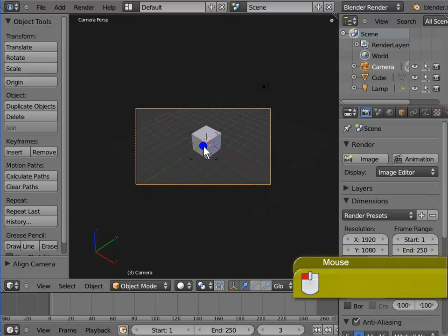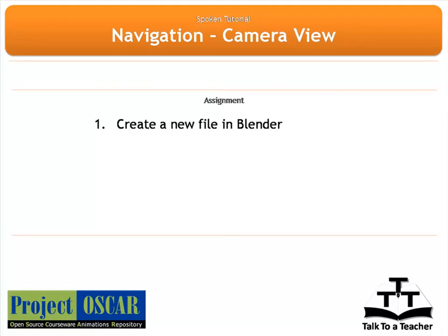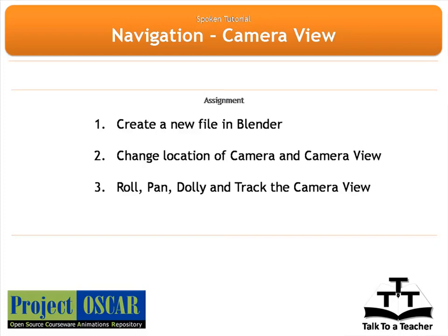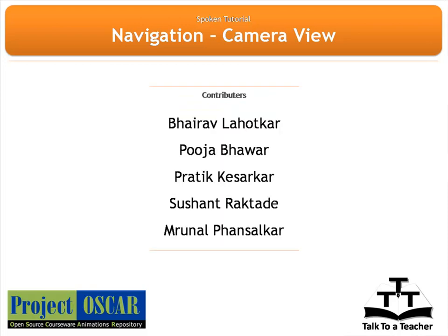Left click on screen to lock the camera view. Now this is your new camera view. That wraps up our tutorial on navigation camera view. As an exercise, in a new file, change the location of the camera and the camera view, roll, pan, dolly, and track your camera view, and use the fly mode to select a new camera view. This tutorial is created by Project Oscar and supported by the National Mission on Education through ICT. Thanks for joining us — this is Monisha from IIT Bombay signing off.